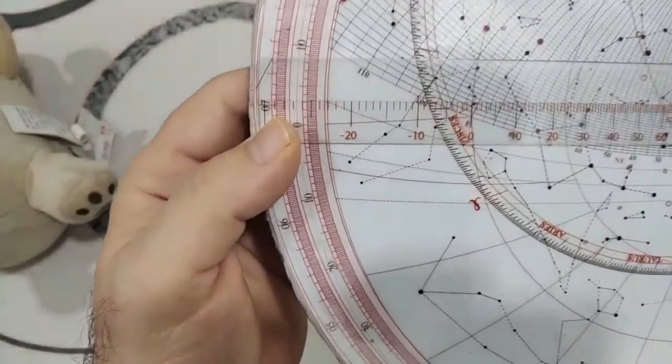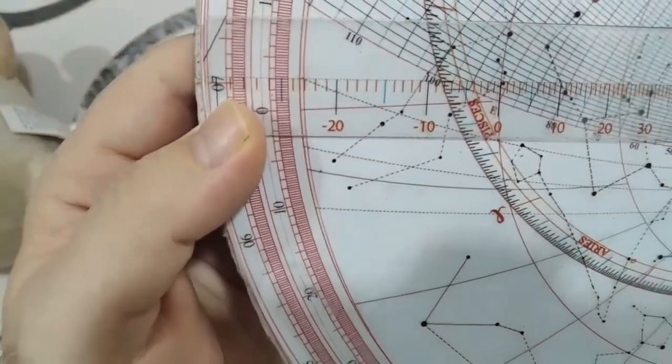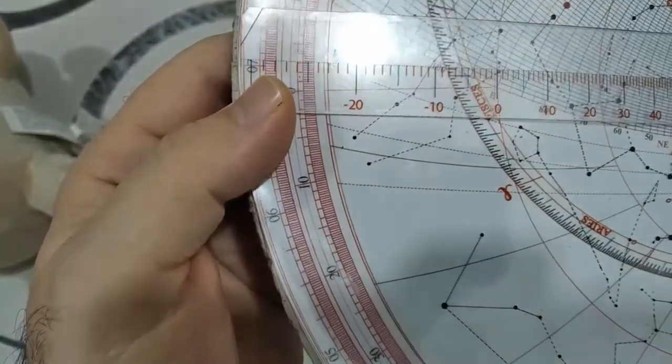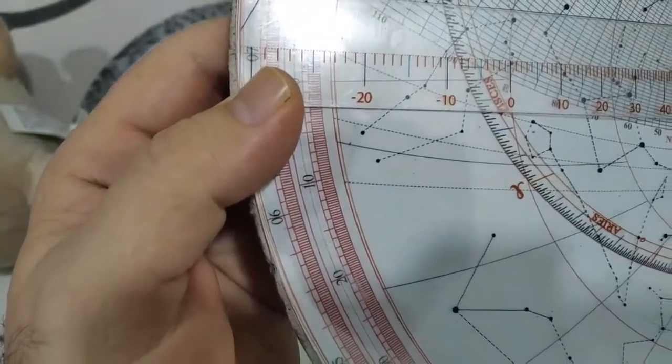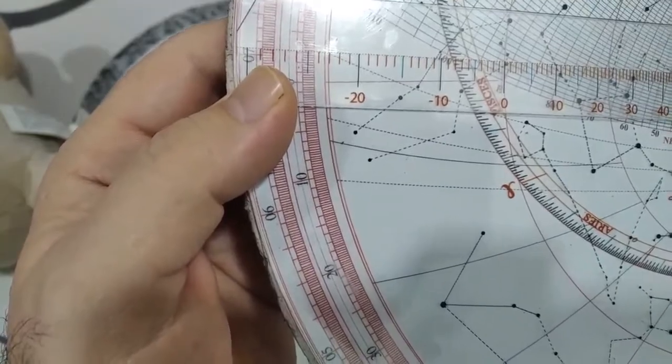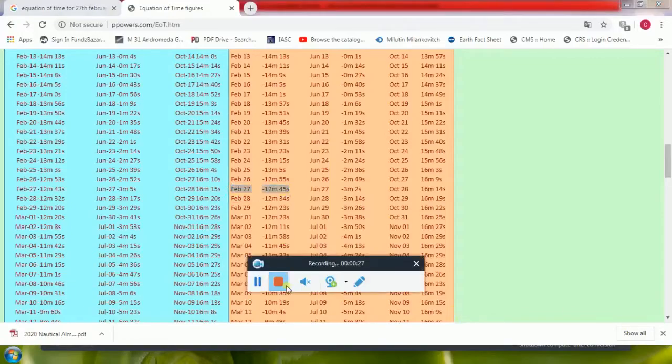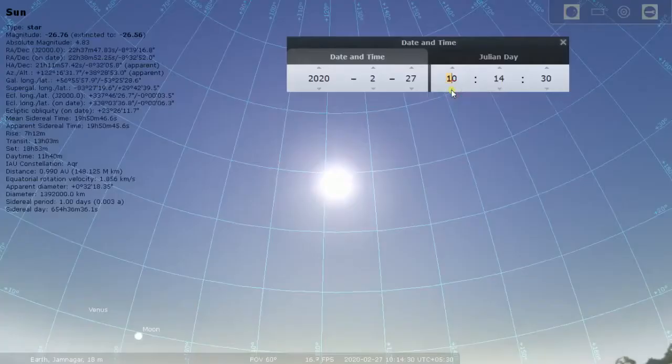It is 7 hours 2 minutes. Add the equation of time for February 27th, which is 12 minutes 45 seconds. Hence, on February 27th, sunrise should be at 7 hours 14 minutes 45 seconds. Let's verify.